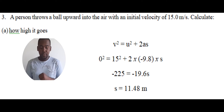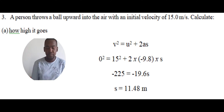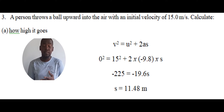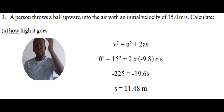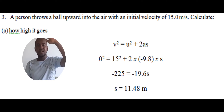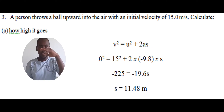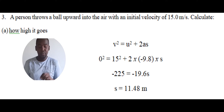The question gives us the initial velocity u, which is 15 meters per second. When an object is thrown up, at the maximum height the velocity is zero, because it stops before it starts to fall. So we have v equals zero, u equals 15, and we also have a. We need to determine if acceleration is positive or negative.